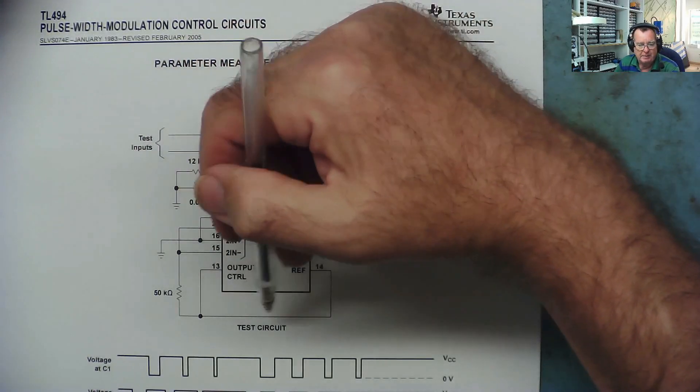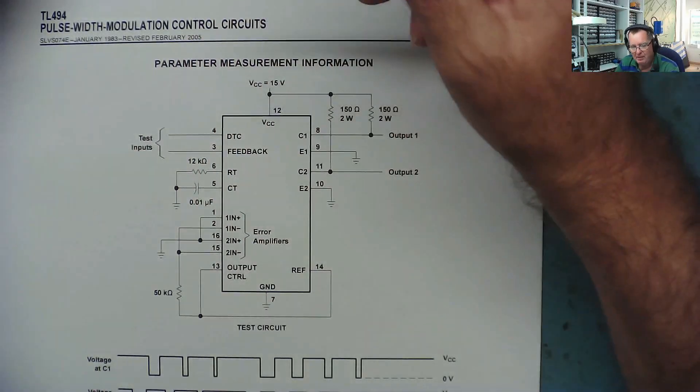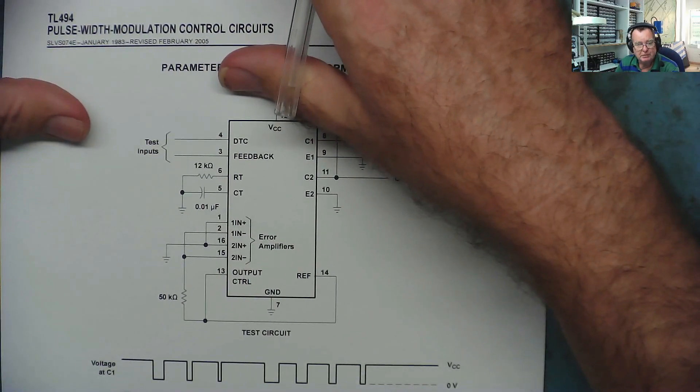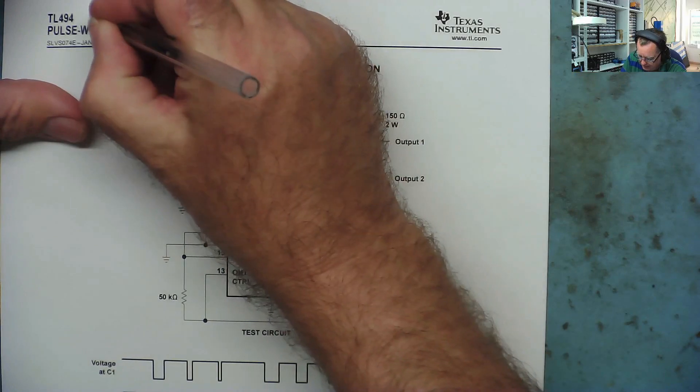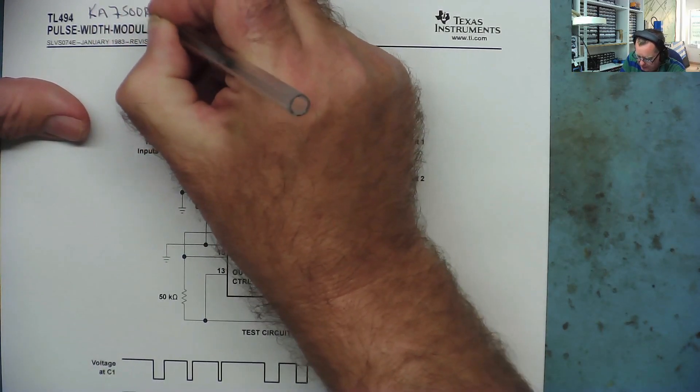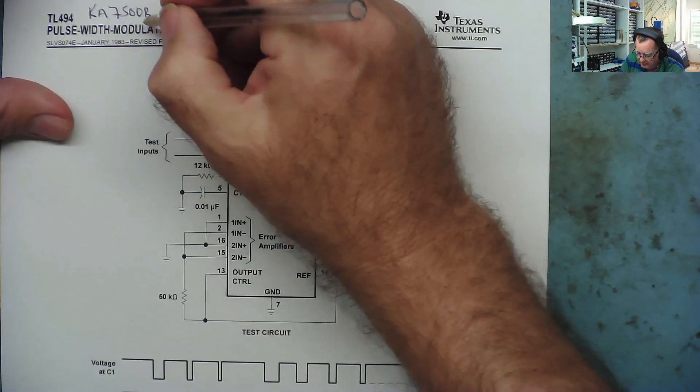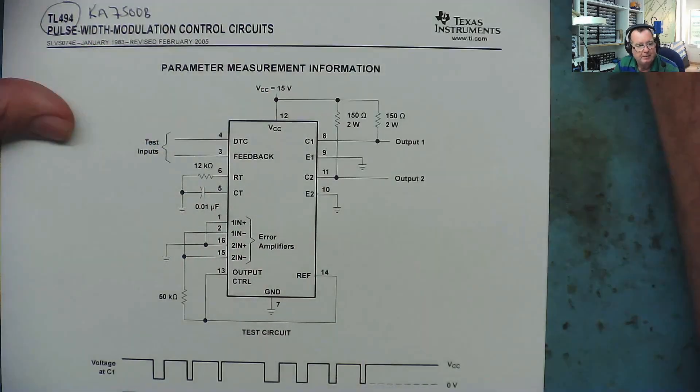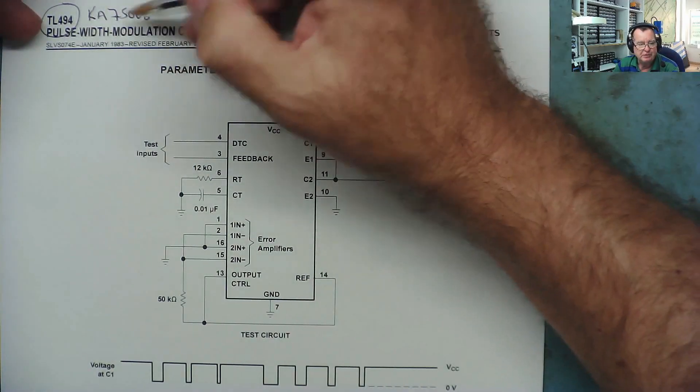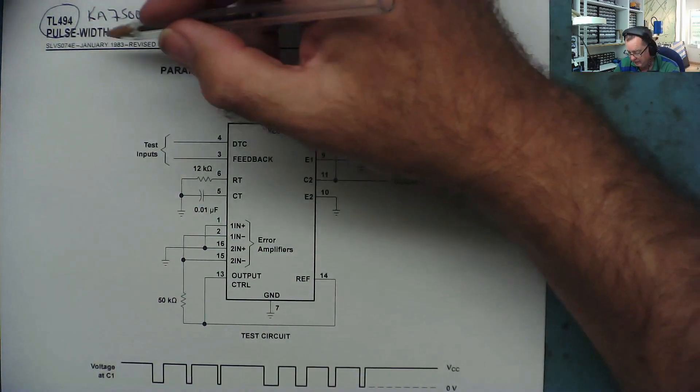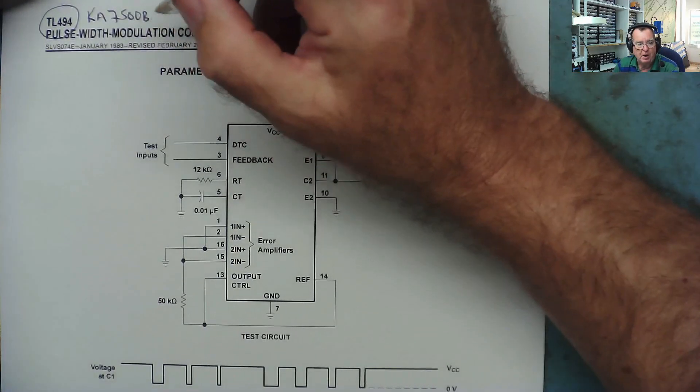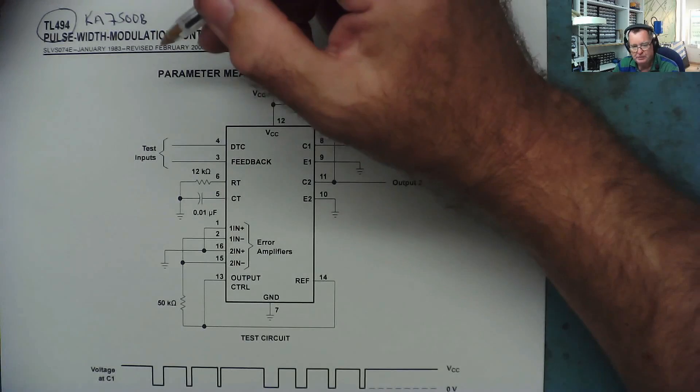The reason you might want to build a tester like this was highlighted on a repair I did this week. I was looking at an ATX power supply and it had a KA7500B controller chip, which is pin-for-pin compatible with the TL494. The chip had a hole in it and it burned, so I knew the chip was faulty.